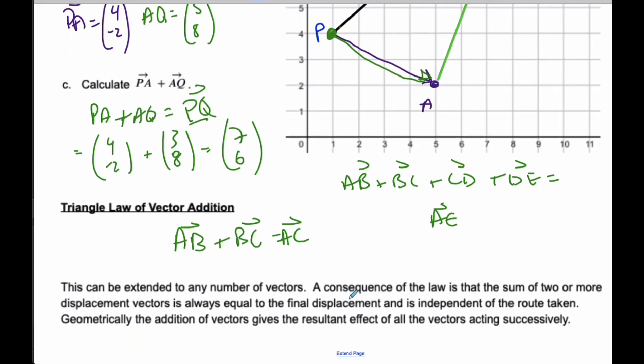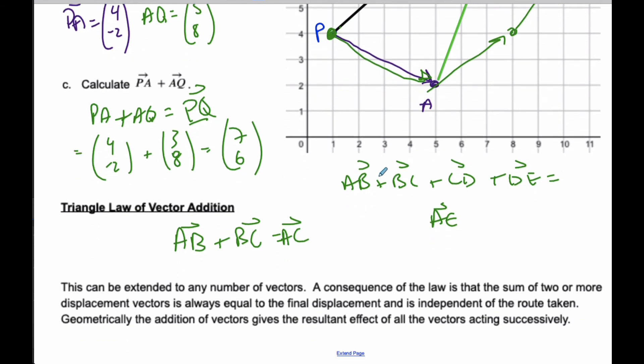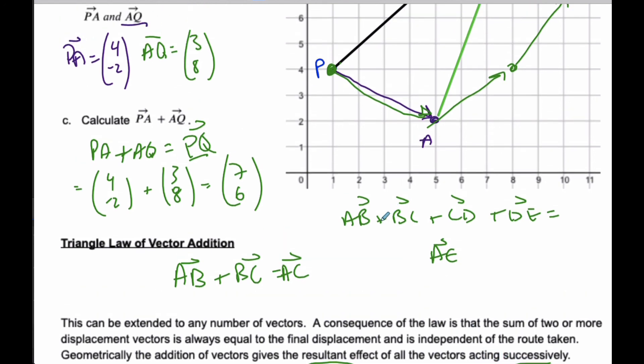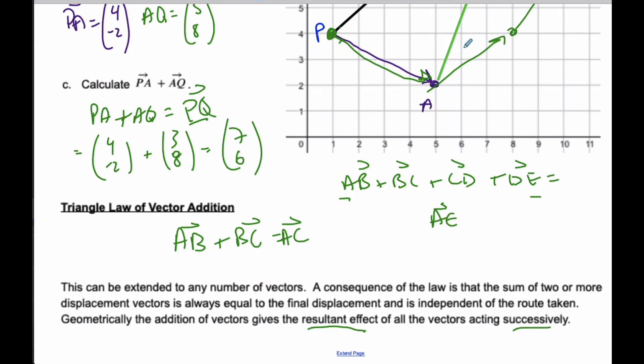And so, what it means is that it doesn't matter which path you end up going. Even if I put on a new point here, if I went from A to here, and then to here, and then to Q, the addition of these vectors would be the same as PQ. Geometric addition of vectors gives the resultant effect of all the vectors being added successively. So it's independent of the route. As long as you start and end and you connect the vectors up, you can clearly add vectors all together. And the resultant, the beginning and the end is the resultant vector of adding them all up, which is a pretty powerful theorem overall.